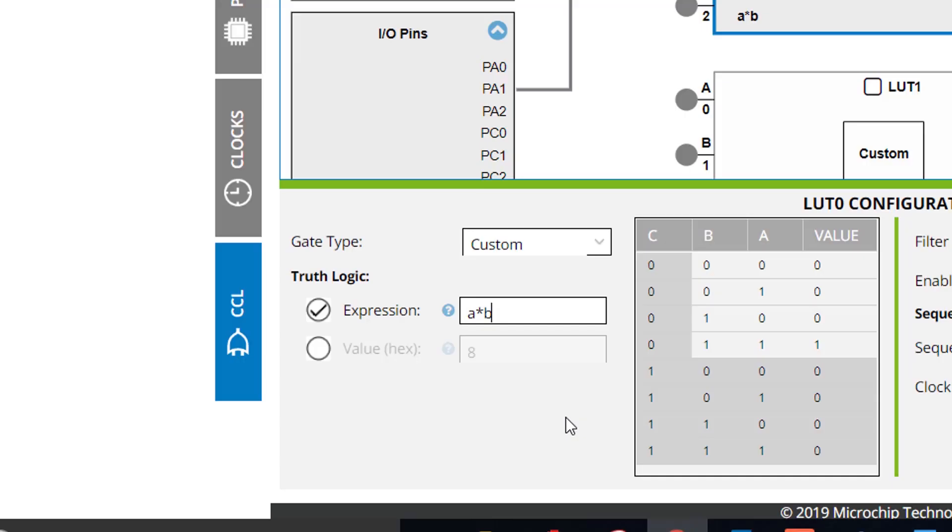But don't worry, if equations scare you like they scare me, the CCL still has you covered. Another way to customize your truth table is through manually entering the values to the truth table. All that you have to do is tell the truth table what conditions should produce what outputs.